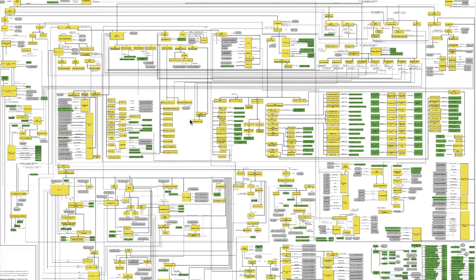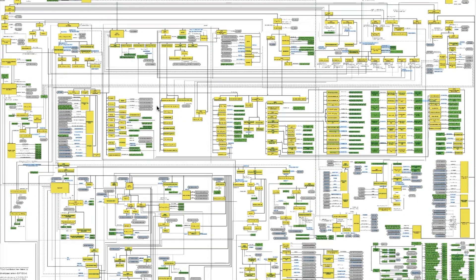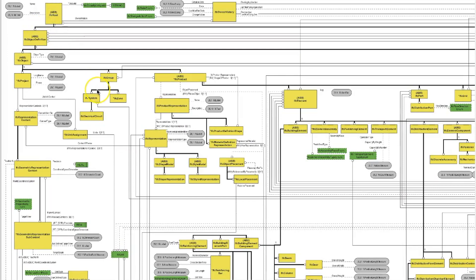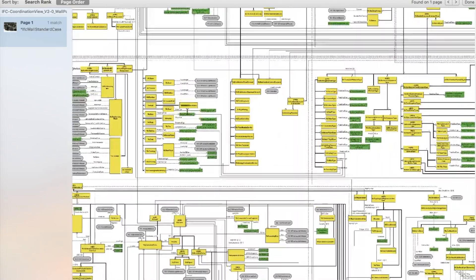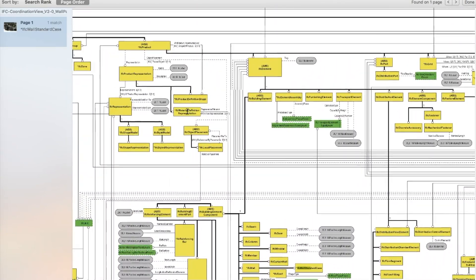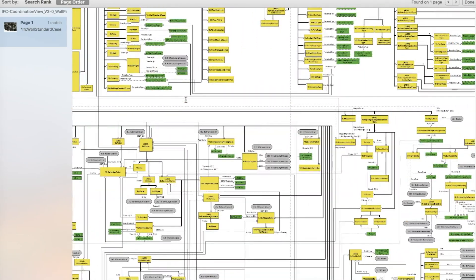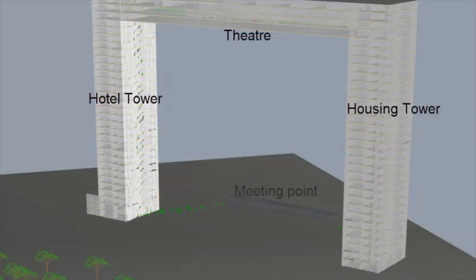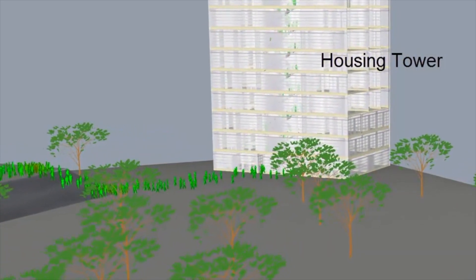Let's browse through the poster of the coordination view. Software vendors can also define their own subset or filter within the IFC agreements. They can create an MVD for the exchange of data necessary for energy simulations or for evacuation simulations. In that case, you would probably find the entity IFC occupant in there.